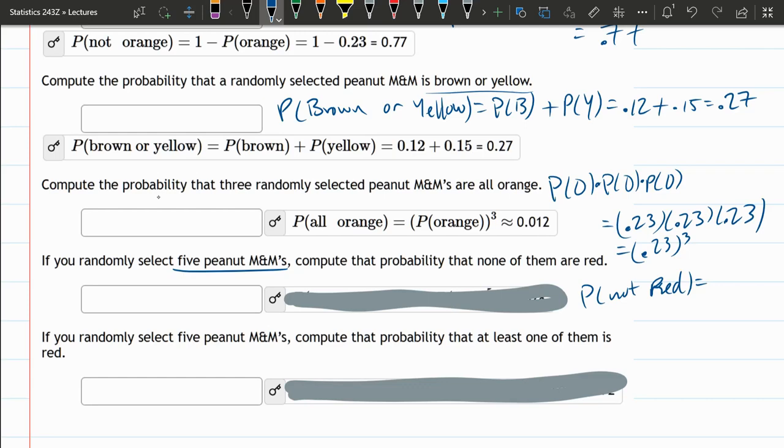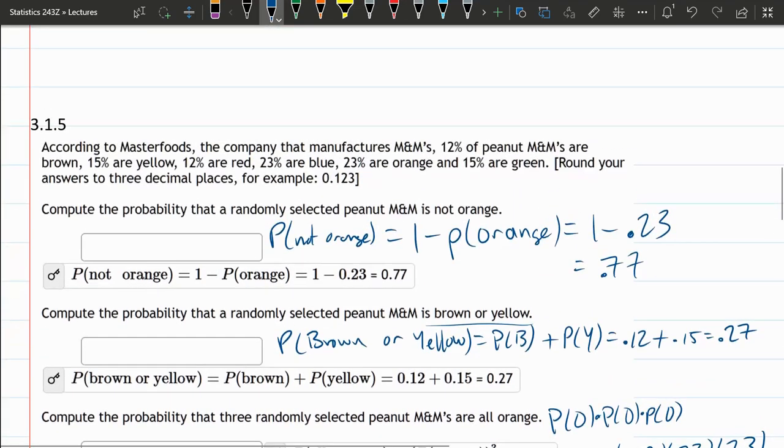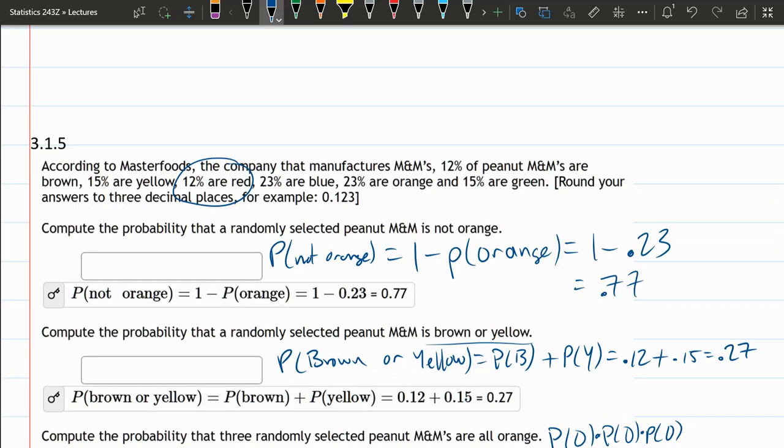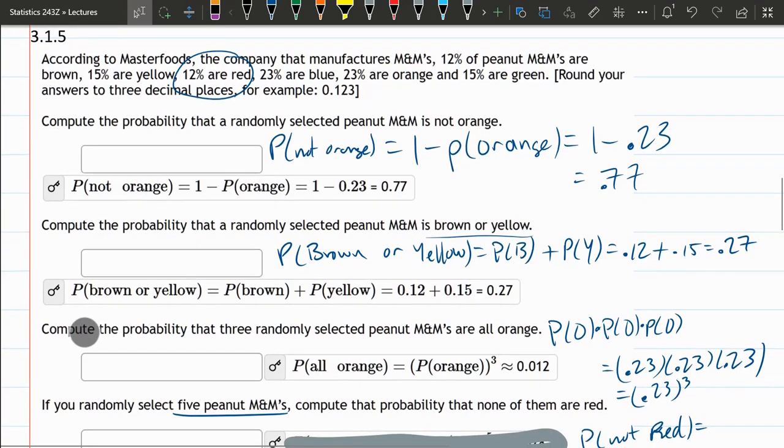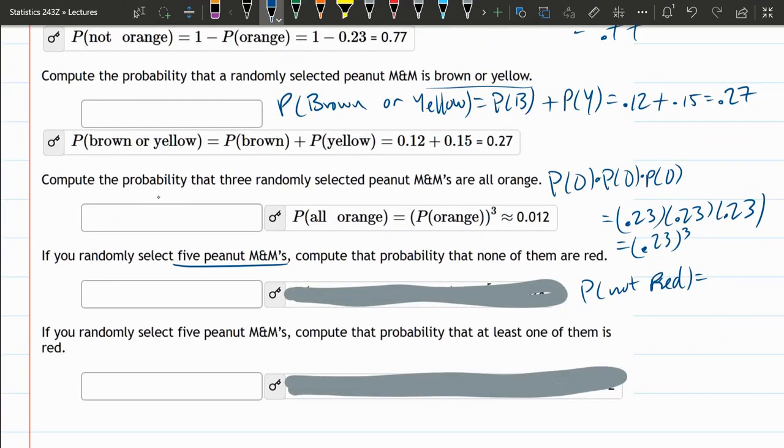Probability of not red for one, somewhere up here is red, 12% are red. The opposite of 12% is 88% or 100% minus 12% is 88%. So that would be the chance of not red on one of them. But we want five in a row. So now at this point, it's very similar to the last one. We just have to repeat this five times. So it's this 0.88 raised to the fifth power.